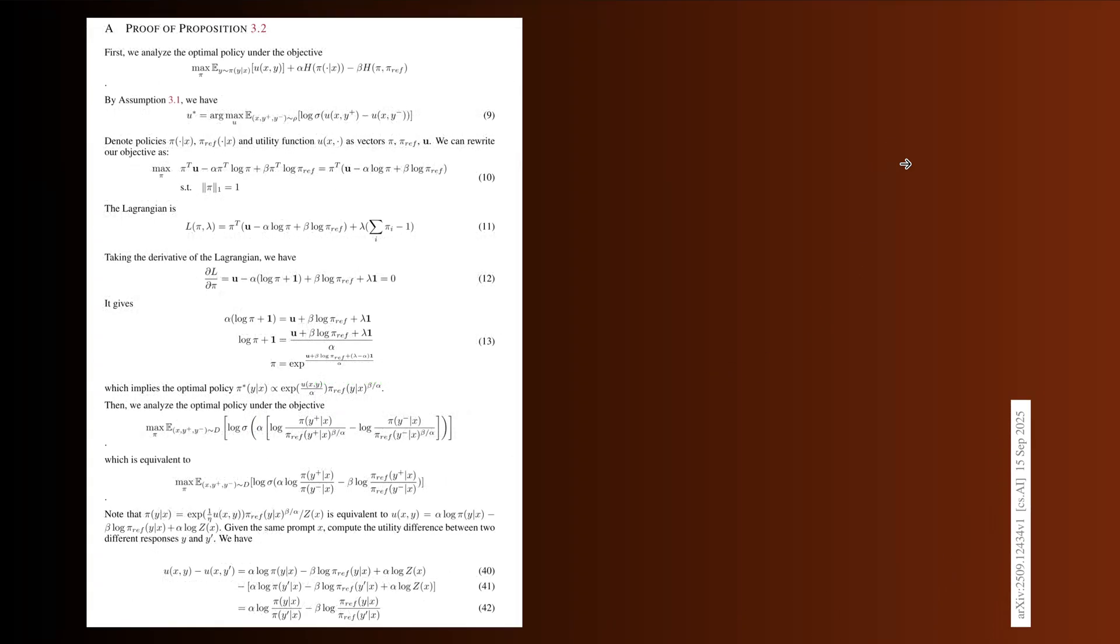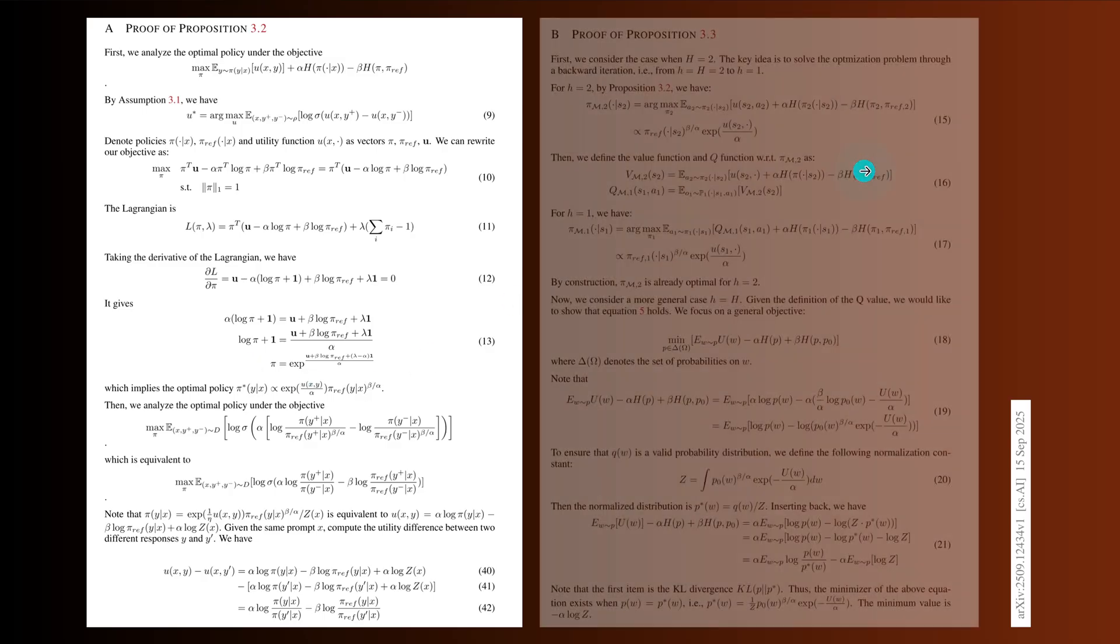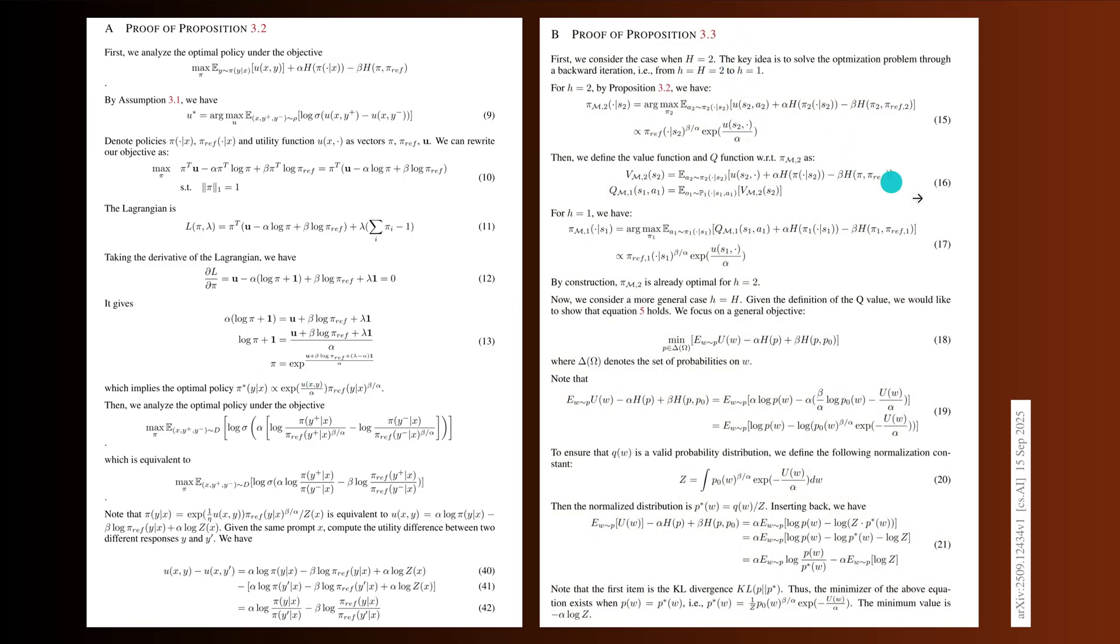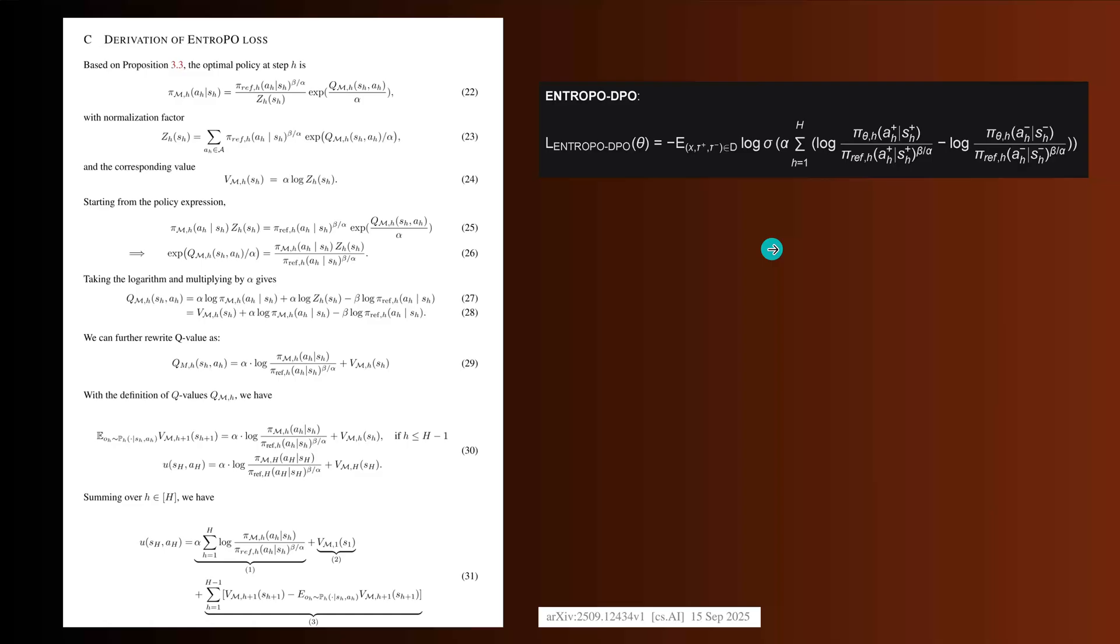But even this is not enough, because if you look at the annex, there you have the complete mathematical proof of the proposition 3.2. And of course, they also do this for 3.3 for the multi-turn. So it is not as easy as it might seem, but I will ignore this for the moment. I will just give you the result of this new entropy regularized DPO loss function and run with the result.